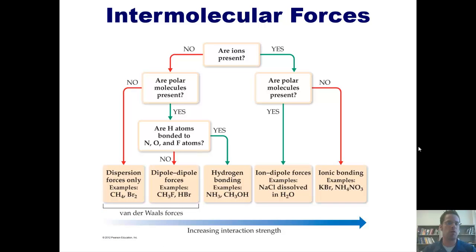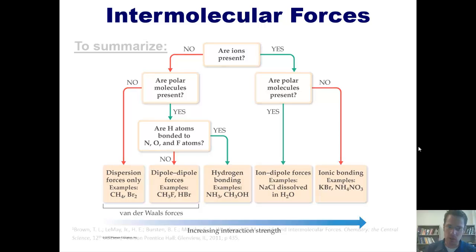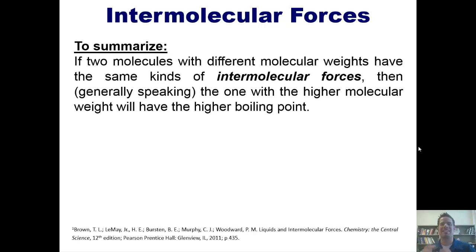This flowchart, which I stole from a person behind the building after beating him senseless—okay, I really just borrowed it from the book—will help you determine what intermolecular force or forces are present for any given compound or situation. So to summarize, if two molecules with different molecular weights have the same kinds of intermolecular forces, then generally speaking, the one with the higher molecular weight will usually have the higher boiling point because there are more atoms to stick on top of each other, especially if you're talking about a vast difference in molecular weights.